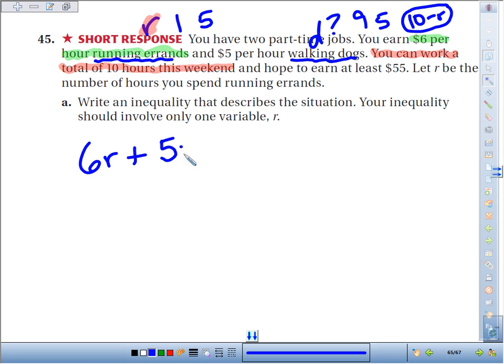So I take 5 times how many hours did I walk the dogs? Well, 10 minus however many I ran errands. This represents the total amount of money I make. I hope to earn at least 55, so I could be more than 55 or equal to 55. And there we go, 45A is taken care of.